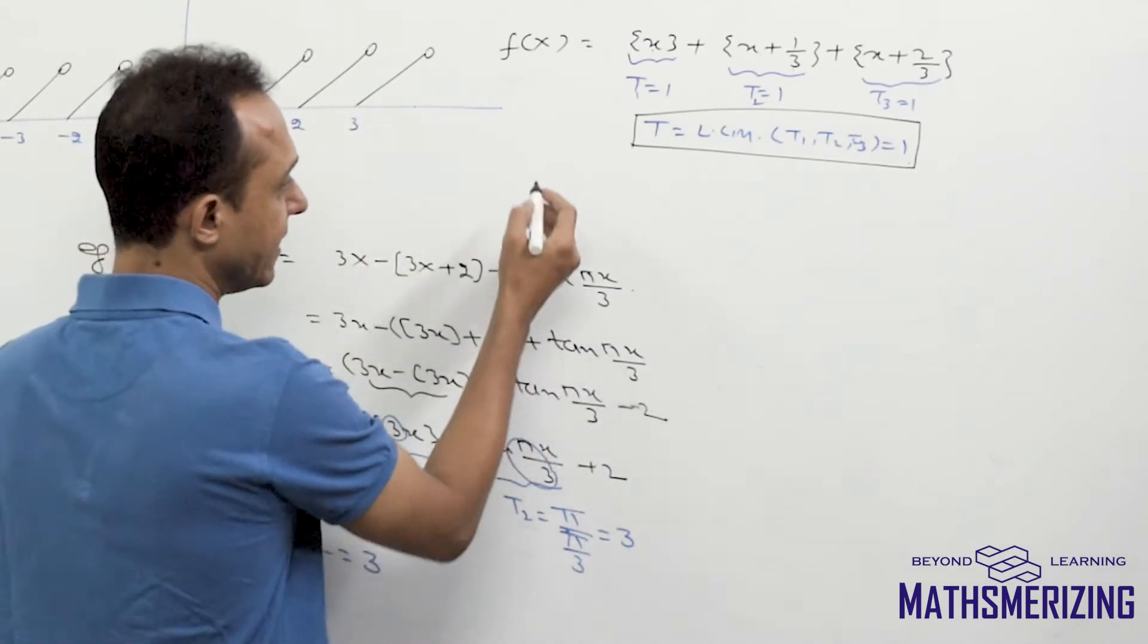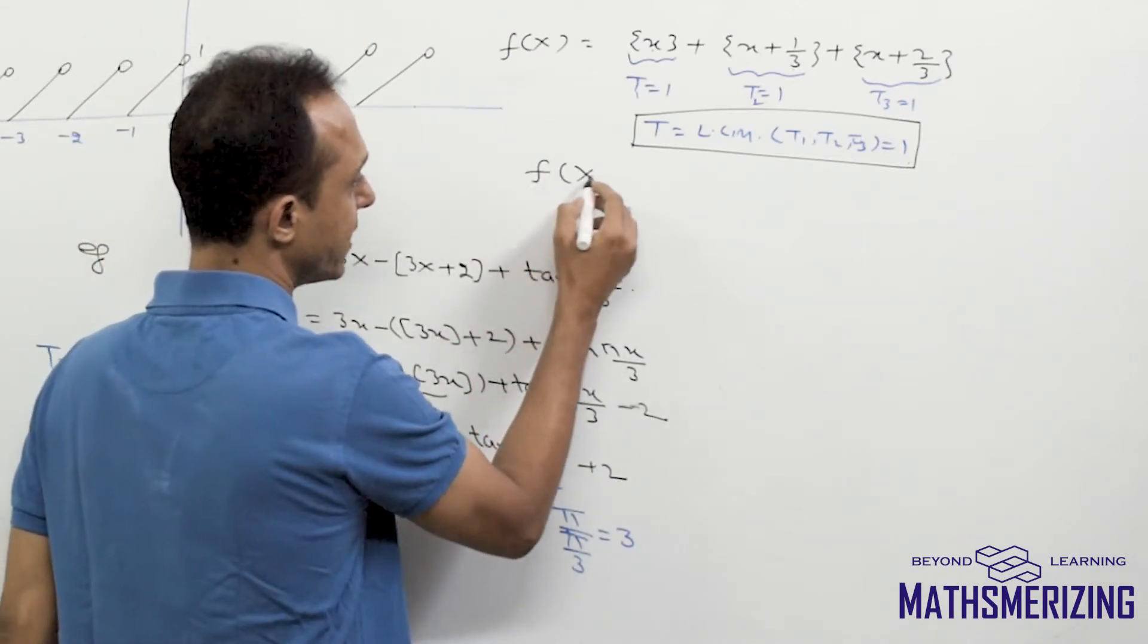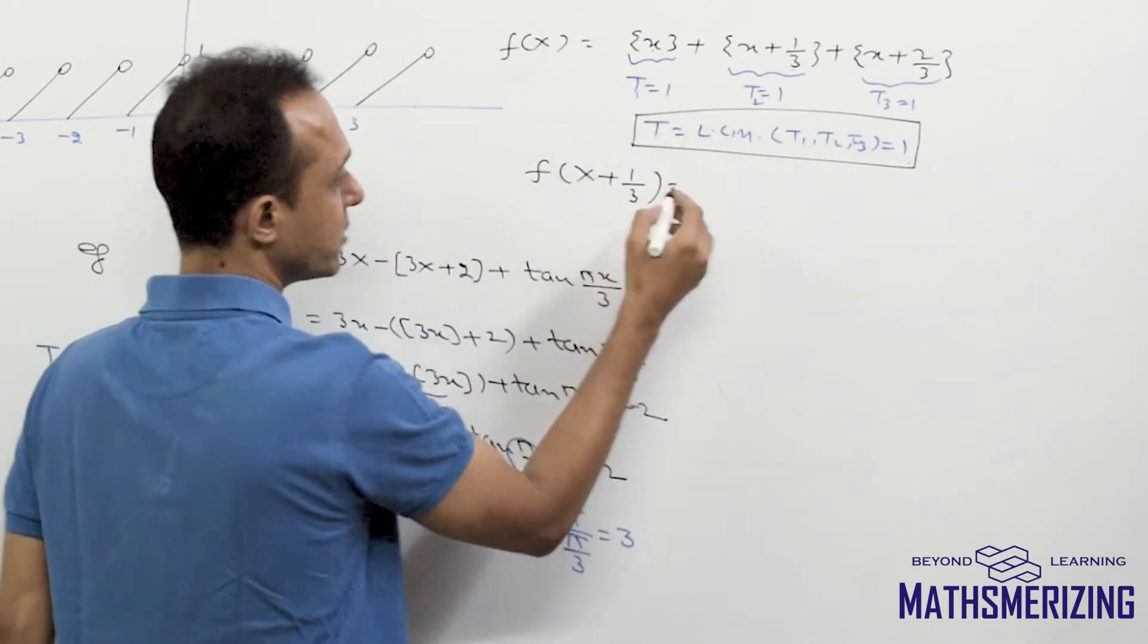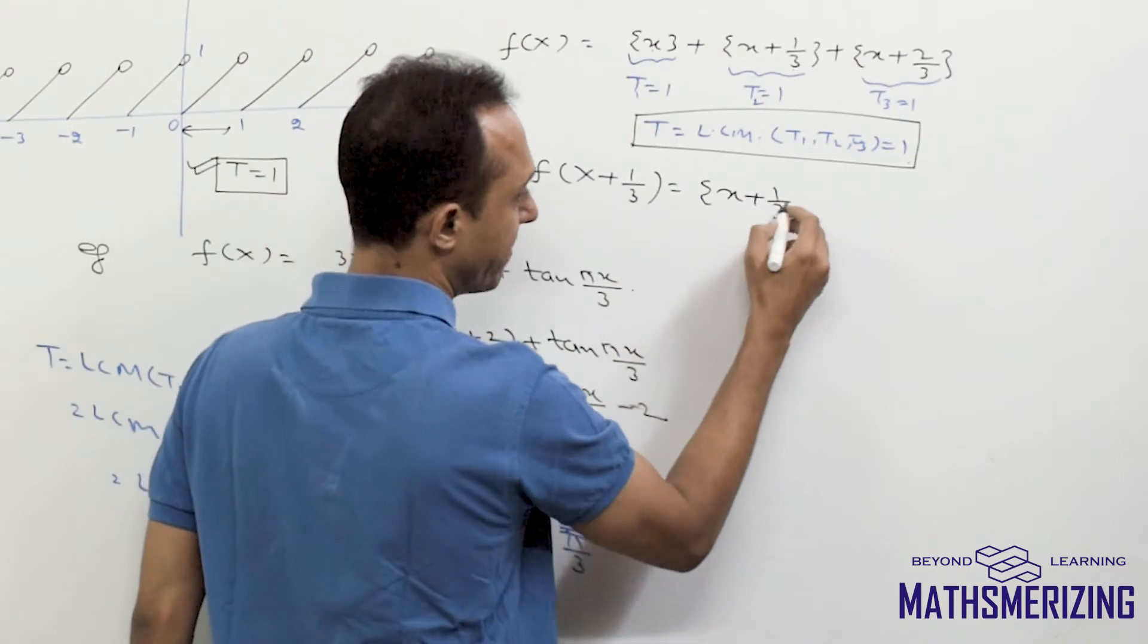So what I'll do is, I'll try and see if I can get the result of x plus 1 by 3. So I'll replace x with x plus 1 by 3.